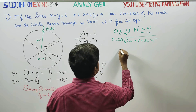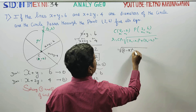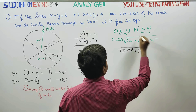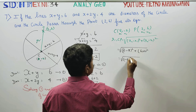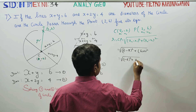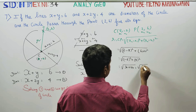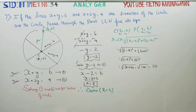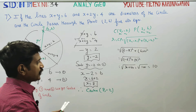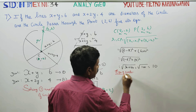Radius equals square root of (2 minus 8) squared plus (6 minus (minus 2)) squared, which equals square root of (minus 6) squared plus (8) squared, equals square root of 36 plus 64, equals square root of 100, which equals 10. Now we apply the circle formula.